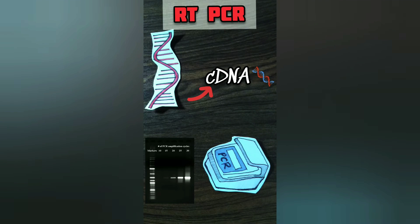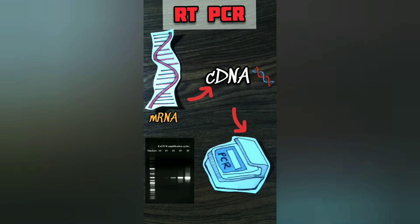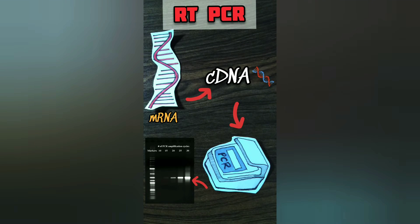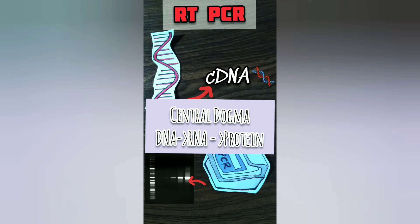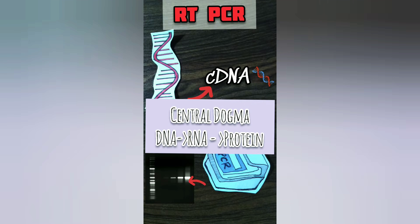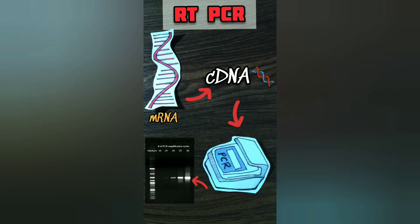RT-PCR is a method in which messenger RNA is converted to complementary DNA, and then the complementary DNA is amplified by PCR technique. This is the reverse manner of the central dogma, where typically DNA goes through transcription to form RNA. It is a very sensitive technique for detecting and quantifying messenger RNA.